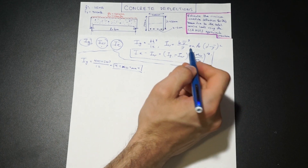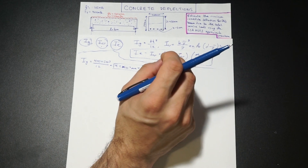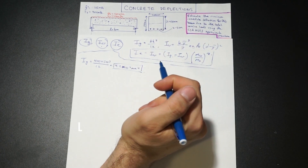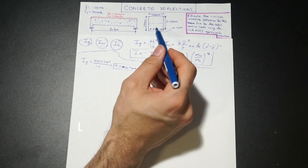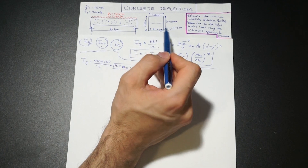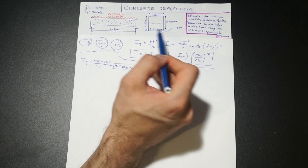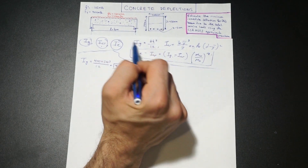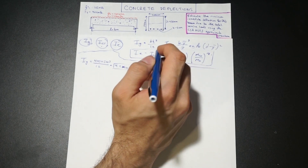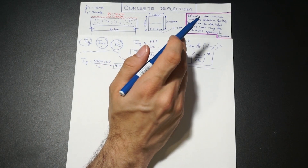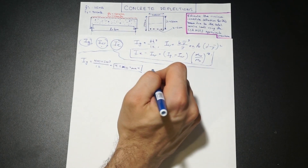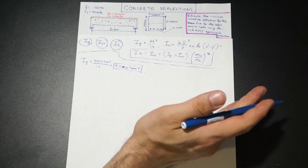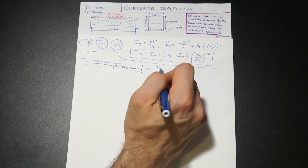Let's find N first — that's our modular ratio. When we're calculating our cracked section, we're going to consider the effect of the concrete as it contributes to our moment of inertia. We consider the section fully cracked, and as a result we're fully utilizing the tension steel. We want to convert the tension steel into an equivalent amount of concrete so we have a uniform material to calculate with. Once we have the whole section in concrete terms, we can calculate the moment of inertia. The modular ratio is simply the modulus of elasticity of the steel over the concrete.